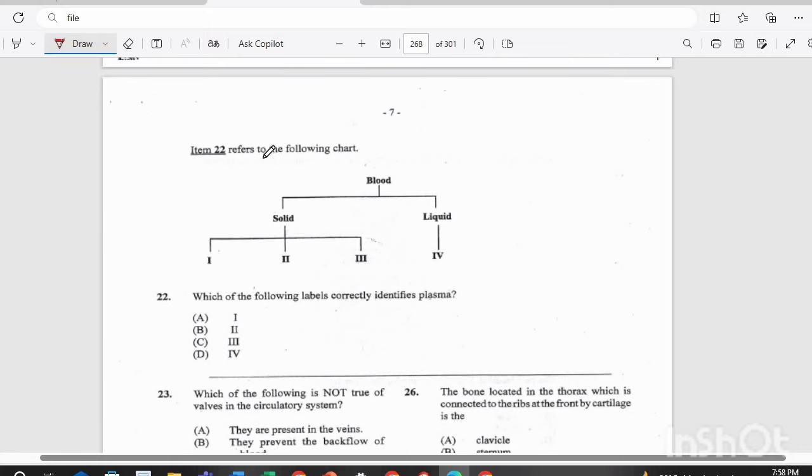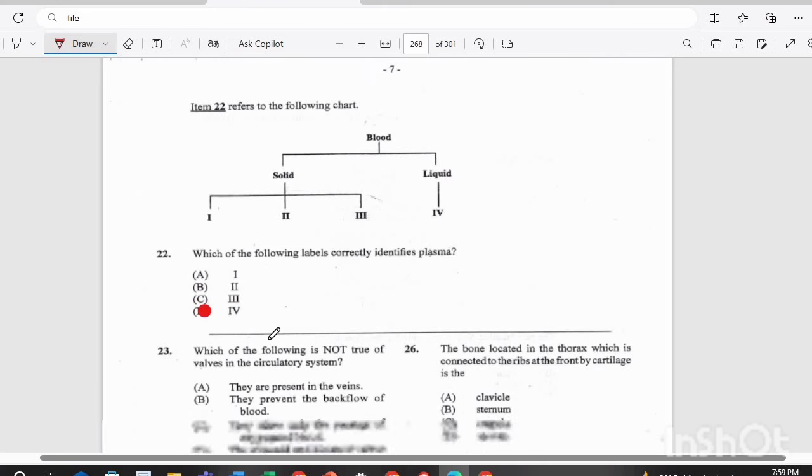Item 22 refers to the following chart. Which of the following labels correctly identifies plasma? We have blood, solid, liquid, three components are solid, and one is liquid. Which of the following labels correctly identifies plasma? If you remember, plasma is the liquid part of blood. So the answer there is D.